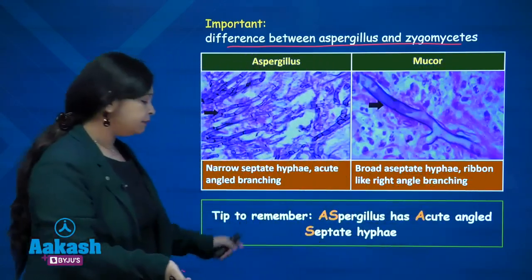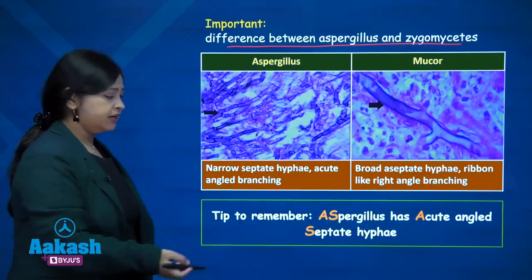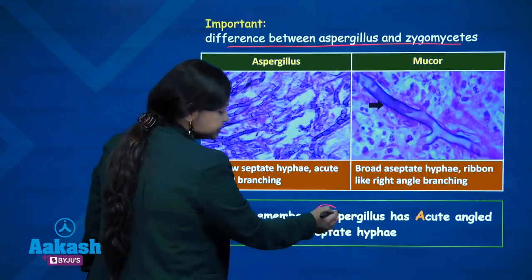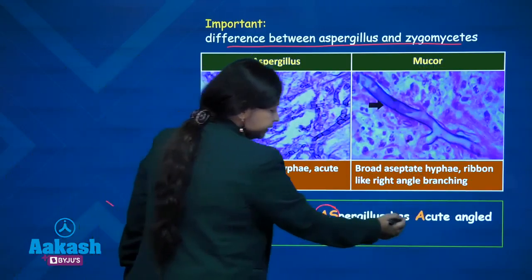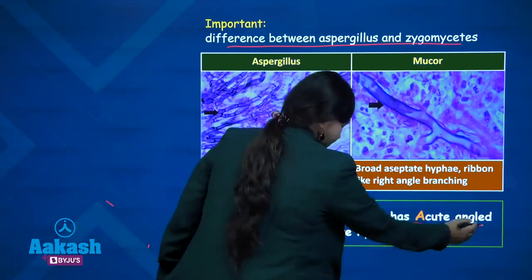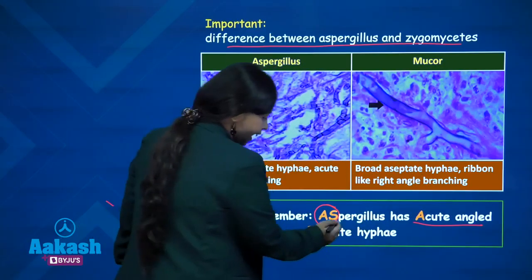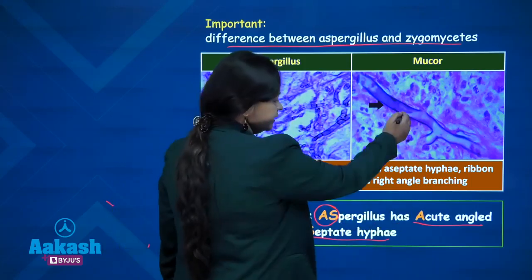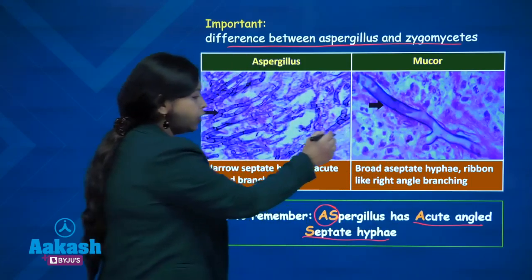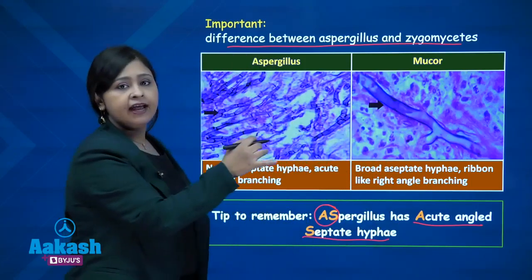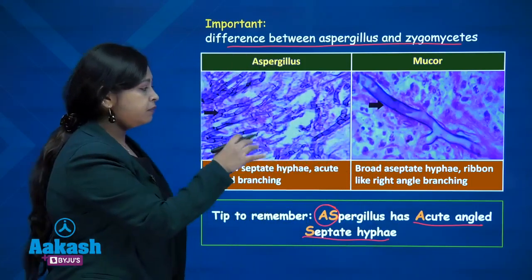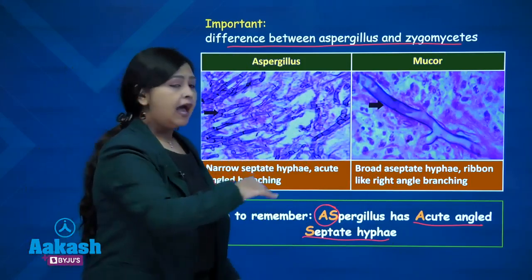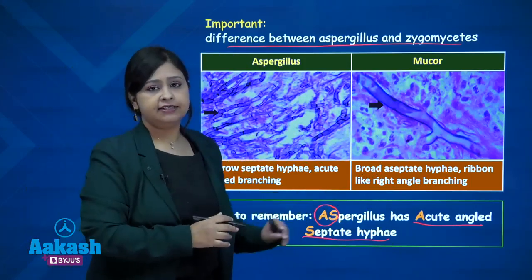The tip to remember: in aspergillus, 'A' stands for acute angle branching and septate hyphae. But in zygomycetes there is broad angle, right angle branching, broad hyphae that are ribbon-like and aseptate.